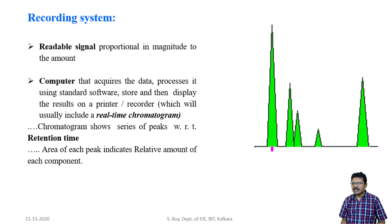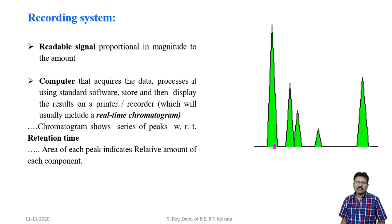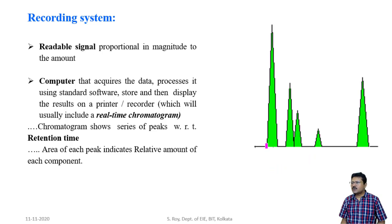According to the different retention times, we can identify which components are present in the mixture because the instrument is already calibrated. If the retention time is a certain value, the component will be identified as A; if another value, it will be B. The area of each peak indicates the relative amount of each component: a higher area means a higher concentration, and a lower area means a lower concentration.